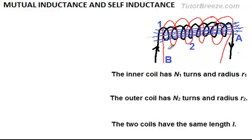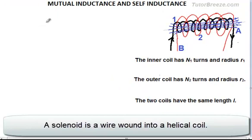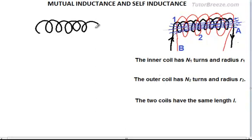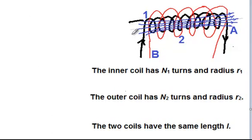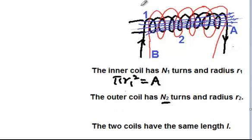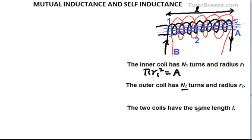Now we are going to find the value of the mutual inductance for this arrangement of coils — these are the same two solenoids. A solenoid consists of a helical winding and usually has a circular cross section. The inner coil has N1 turns and radius R1; the area of cross section of this inner coil, which would be πR1², will be denoted by A. The outer coil has a radius R2 and number of turns N2. Both coils have the same length L. From the definition of mutual inductance, we take the ratio of the flux through coil 2 to the current in coil 1.